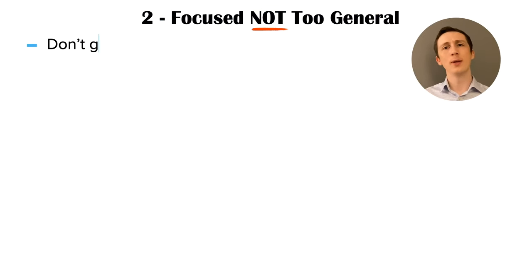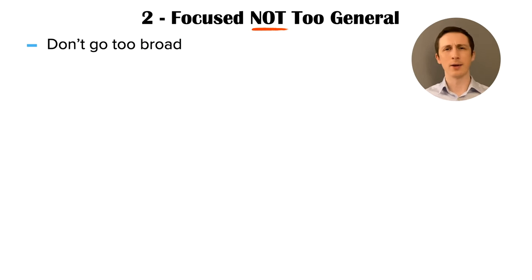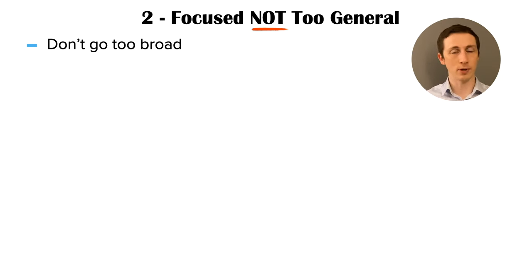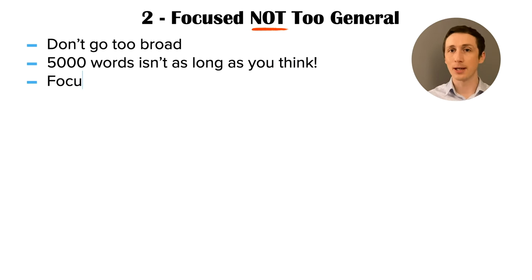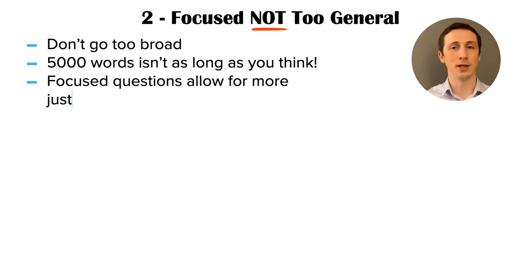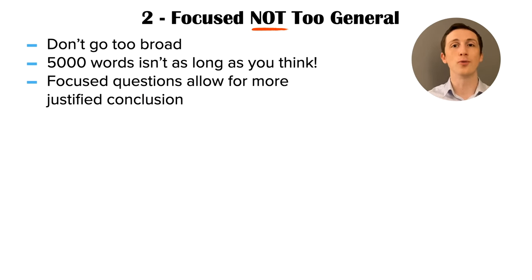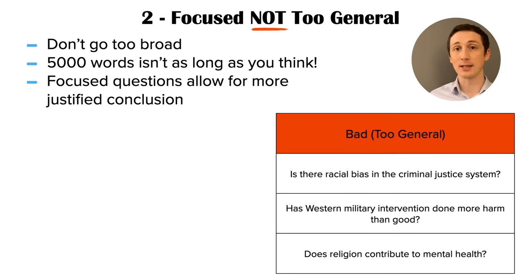Point two: you want to think about the scope of your EPQ question or title. It is true that being too specific or too focused can be bad, but more often questions are too general — they're trying to do too much. 5,000 words isn't actually that much. Your arguments and examination are going to be a lot more detailed than you're used to, and that's what's going to fill up that word count. You don't need to try to do everything in your question. Let's have a look at some examples.